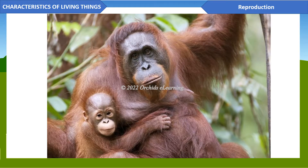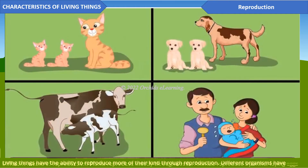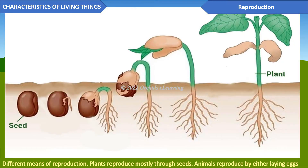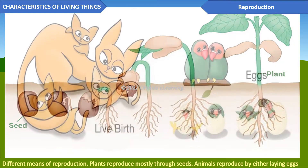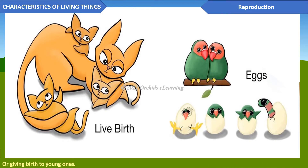Reproduction: living things have the ability to reproduce more of their kind through reproduction. Different organisms have different means of reproduction. Plants reproduce mostly through seeds, while animals reproduce by either laying eggs or giving birth to young ones.